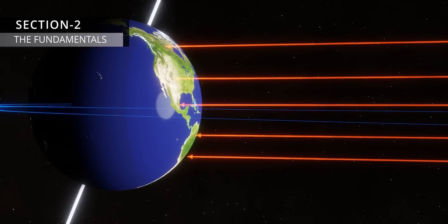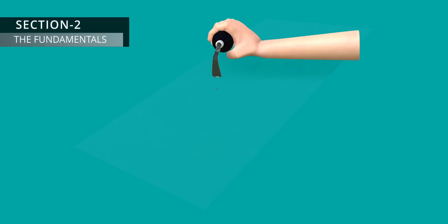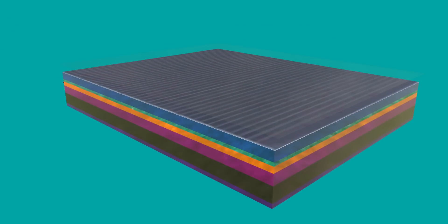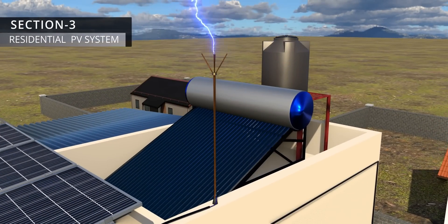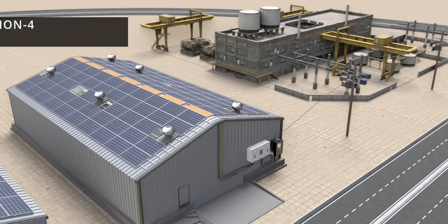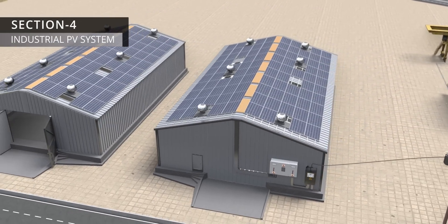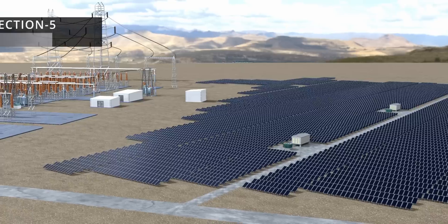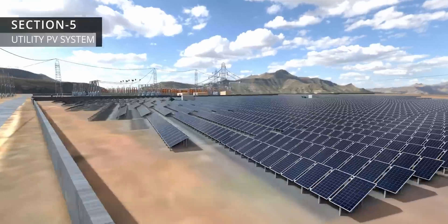In this course, first I will teach you all the fundamental knowledge required to design a successful photovoltaic system. After that, we will move to the detailed design execution of a residential photovoltaic system. In the next section, we will have a quick overview of a commercial PV system. And in the fourth section, we will study solar utility plants in detail and their design methodologies.